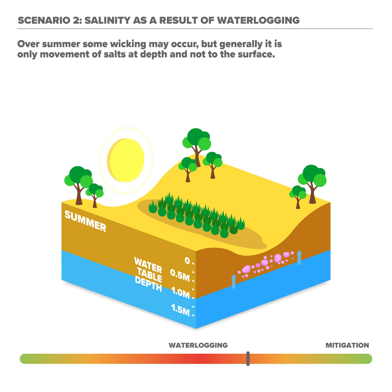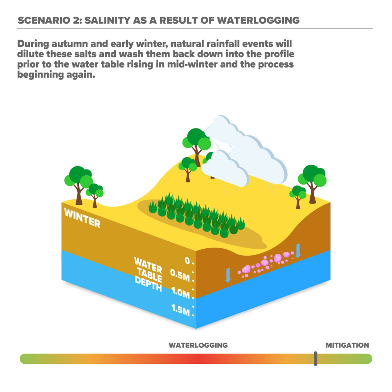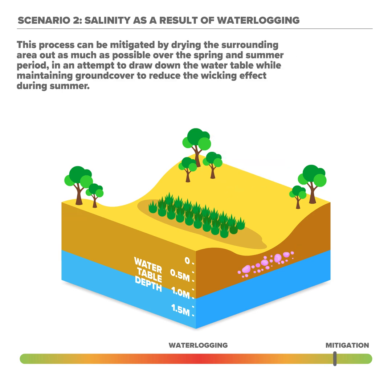Over summer, some wicking may occur, but generally it is only movement of salts at depth and not to the surface. During autumn and early winter, natural rainfall events will dilute these salts and wash them back down into the profile prior to the water table rising in mid-winter and the process beginning again. This process can be mitigated by drying the surrounding area as much as possible over the spring and summer period in an attempt to draw down the water table, while maintaining ground cover to reduce the wicking effect during summer.